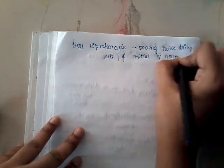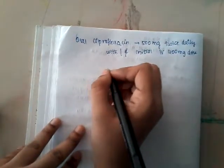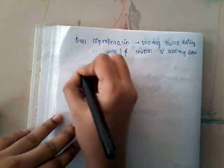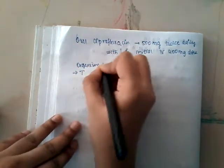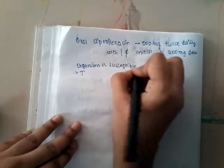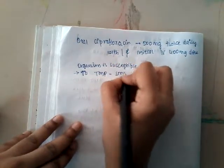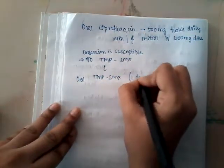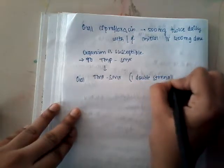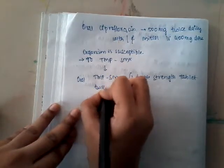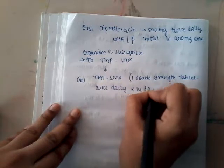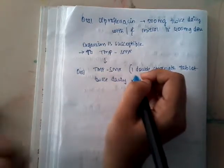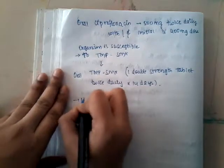If culture results show the organism is susceptible to trimethoprim-sulfamethoxazole, you can give oral TMP-SMX, one double-strength tablet twice daily for 14 days. If the uropathogen susceptibility is unknown and TMP-SMX is to be used, then we give an IV dose of 1 gram of ceftriaxone.